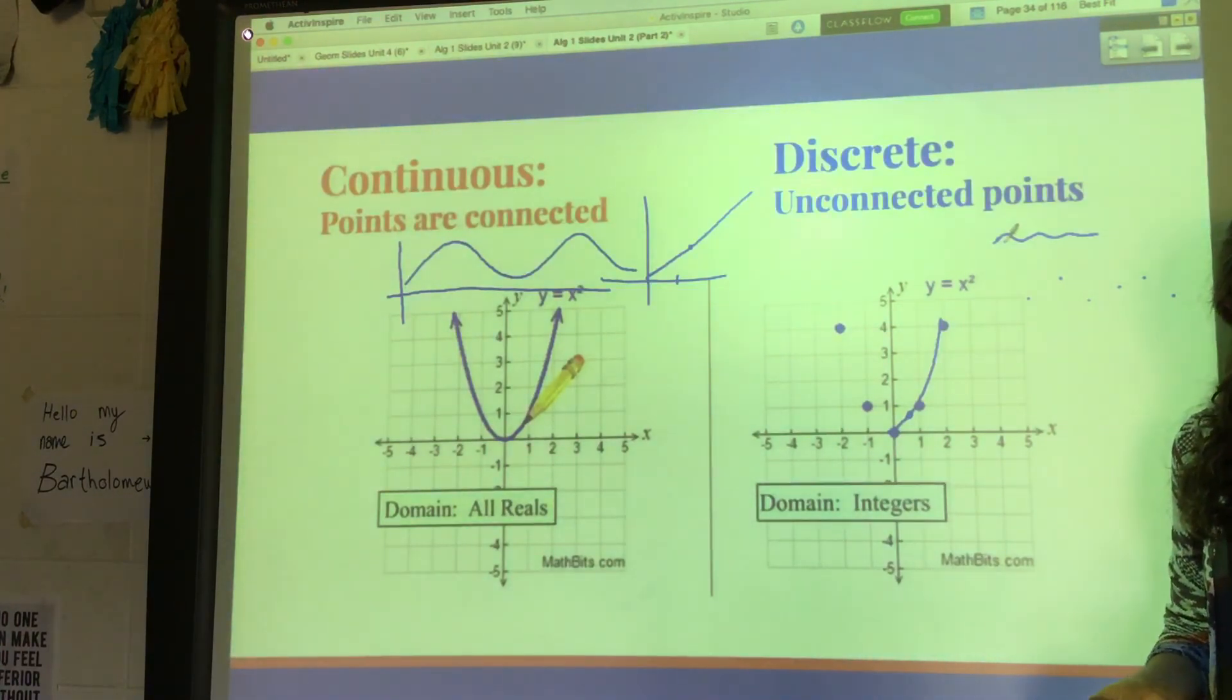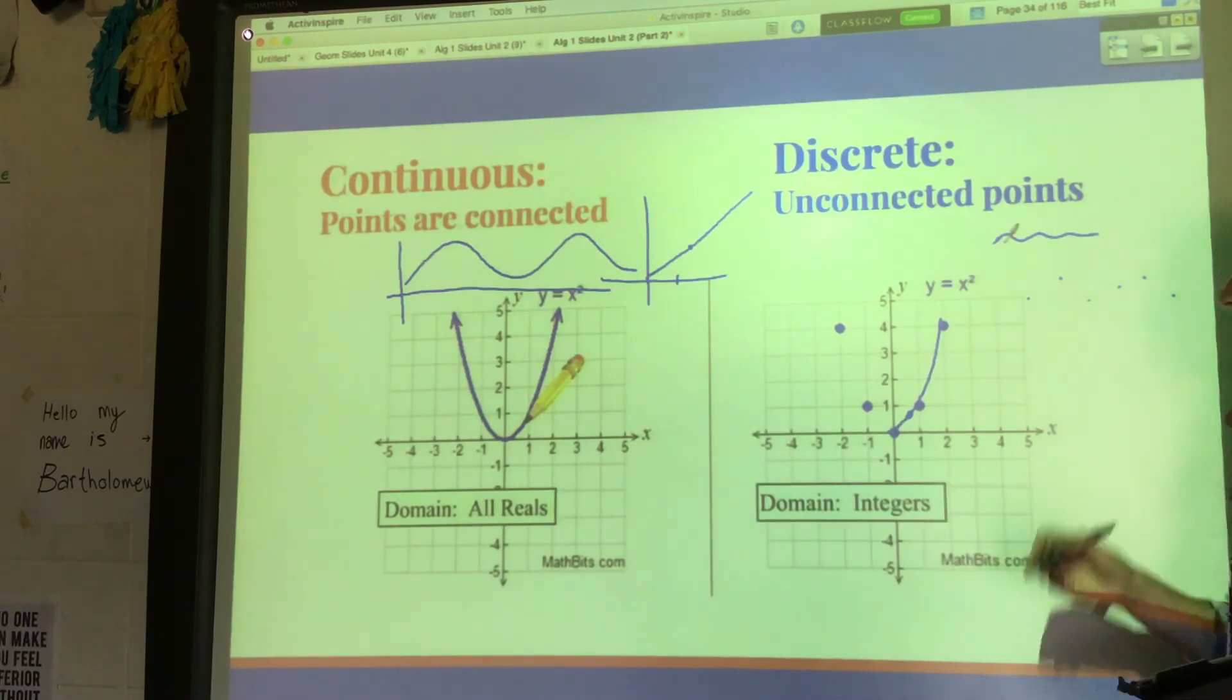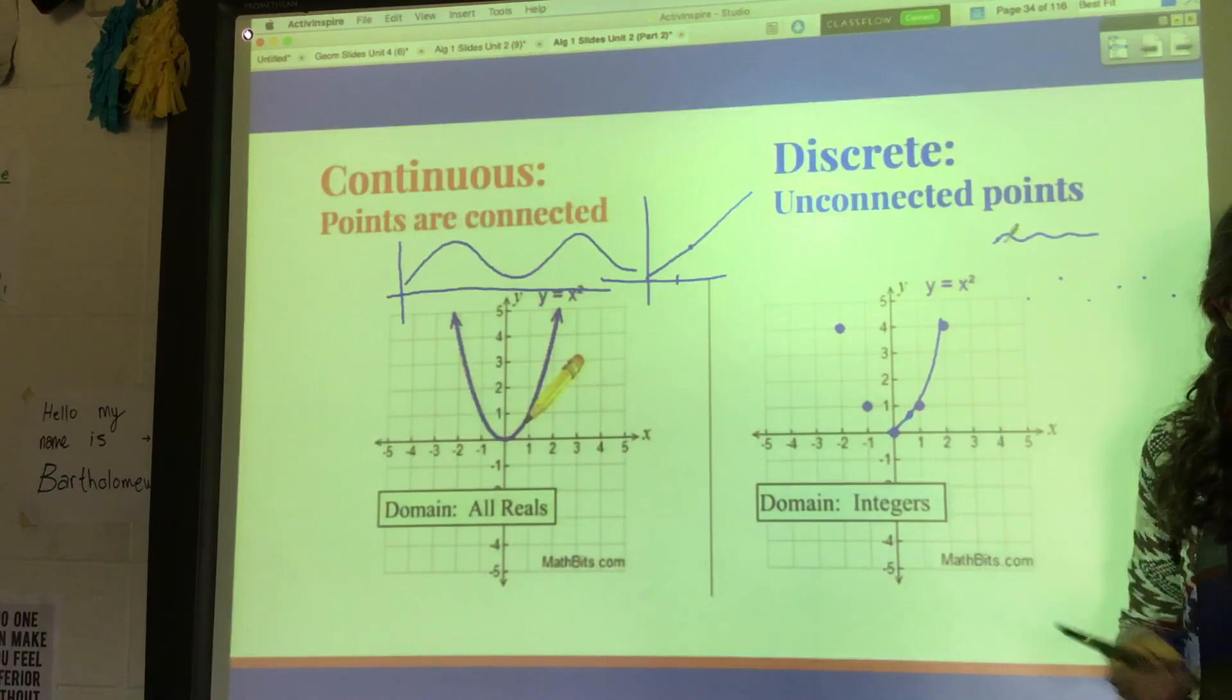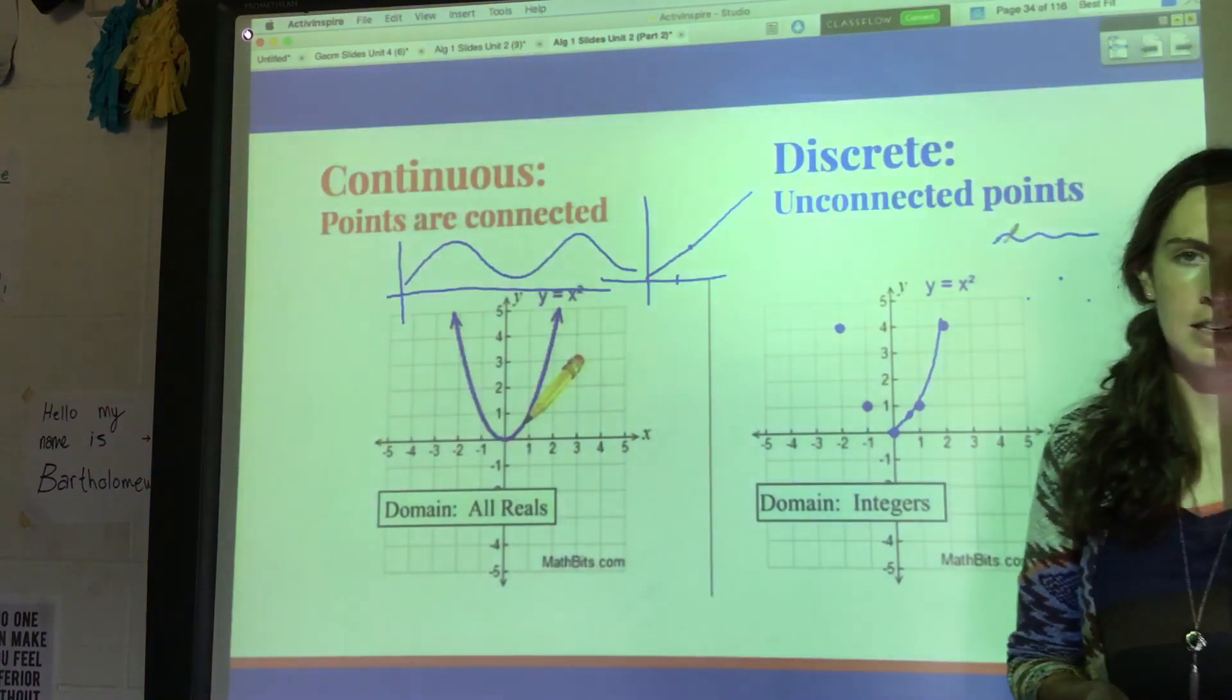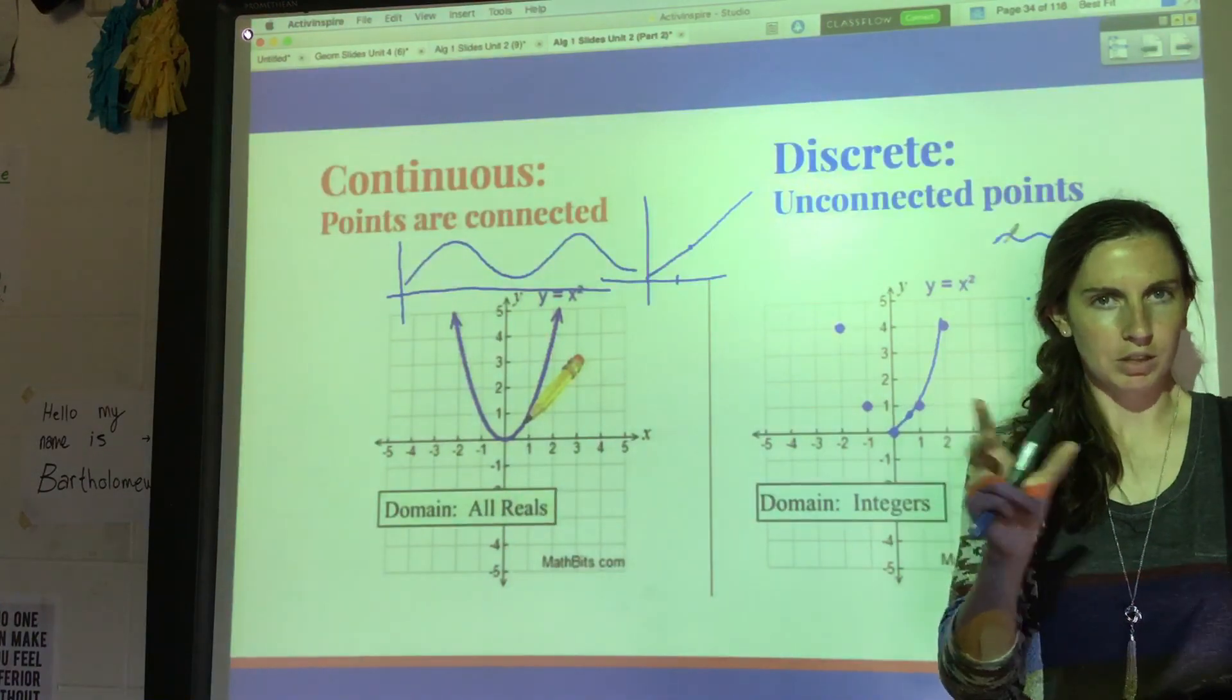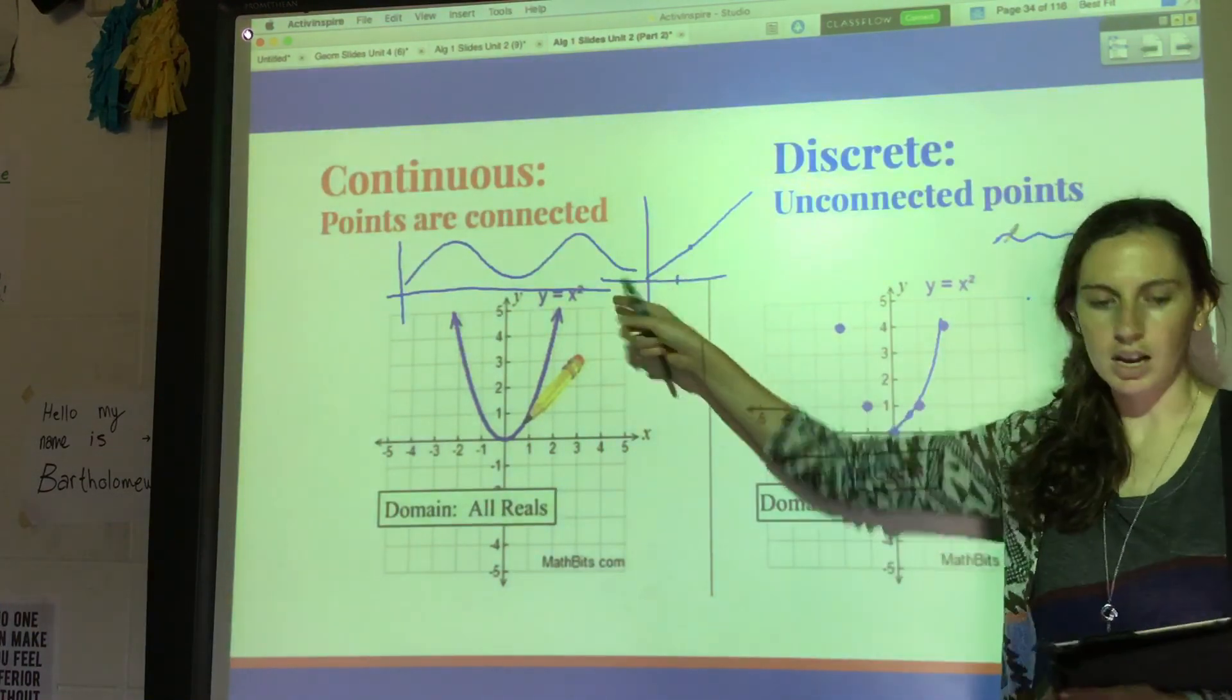Or like the number of TV sets you own. You probably can't own a quarter of a TV set, so again those would be discrete values. Or like the number of puppies in a litter, the number of questions on a math test. Those are all whole numbers, discrete values, not continuous functions.